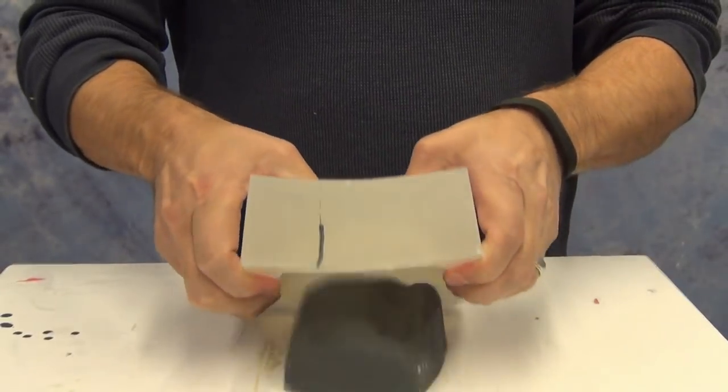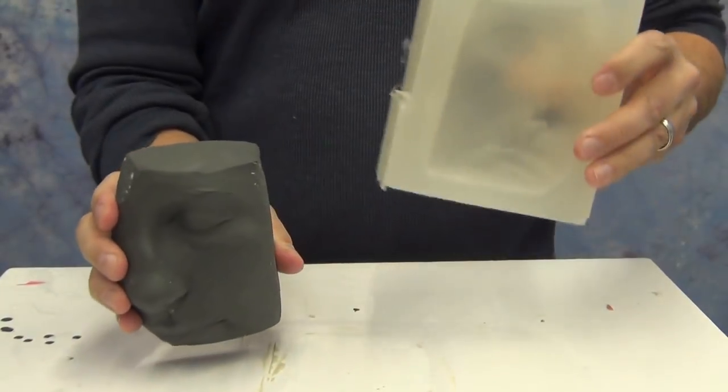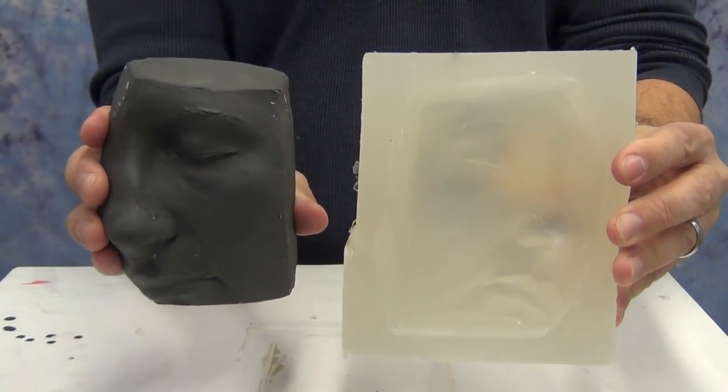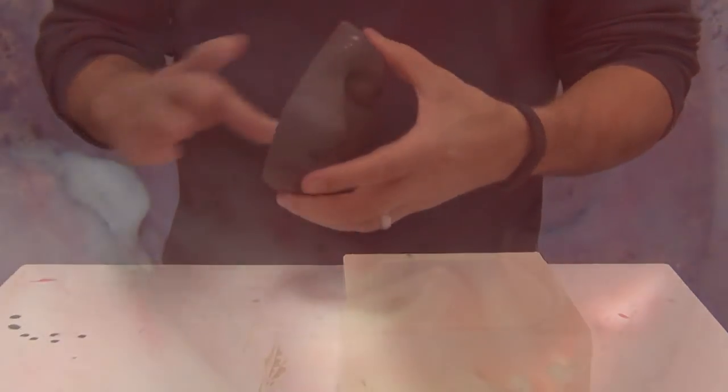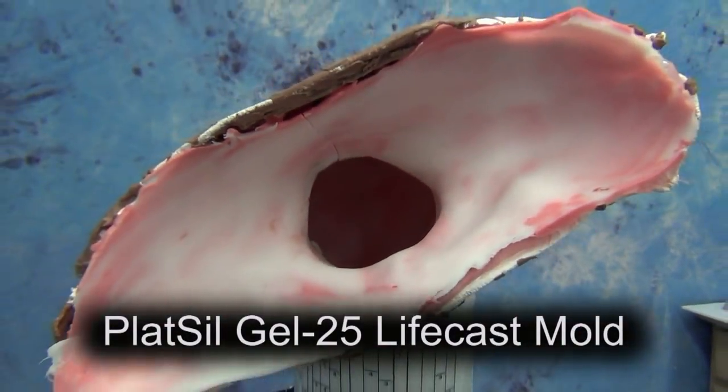Creating a corrected positive with 1630 resin using a PlatSil Gel-25 mold. This positive is for casting silicone prosthetics, and to begin we'll need a life cast mold of our subject.